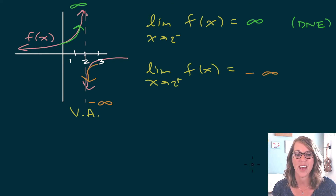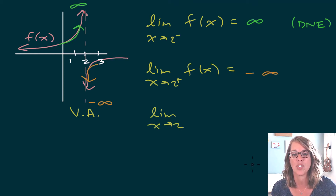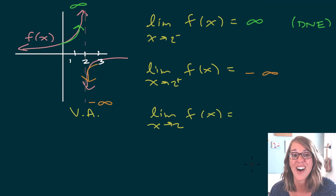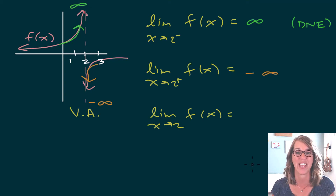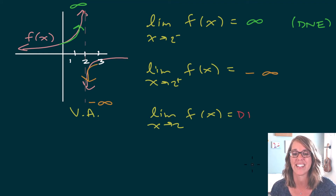If I follow this up and ask for the overall limit as x approaches 2 of f of x, my answer does not exist. I can't even describe the behavior here, so I would simply say does not exist.